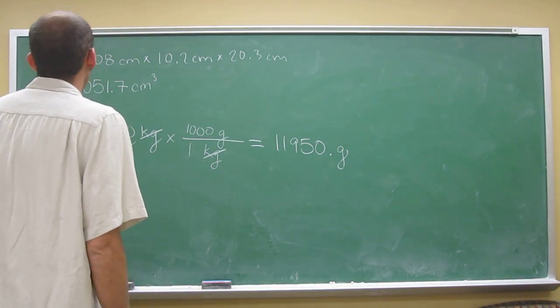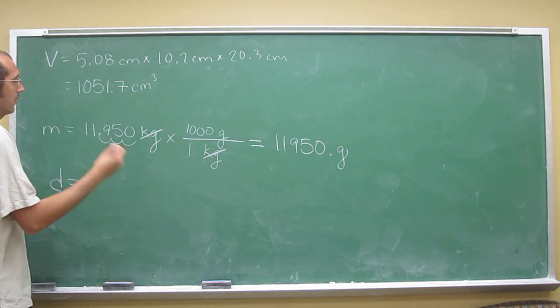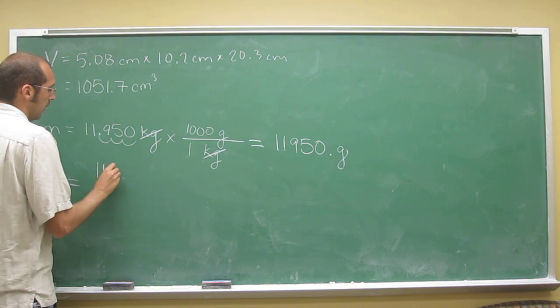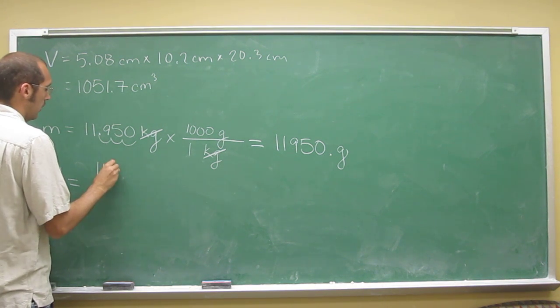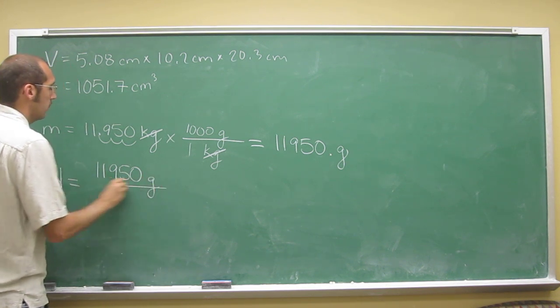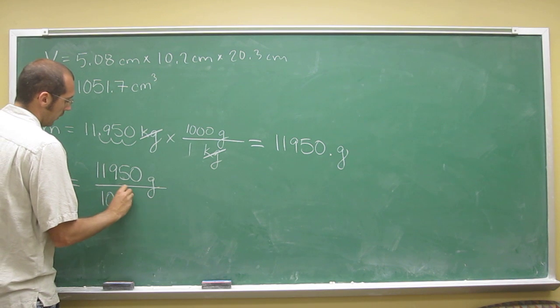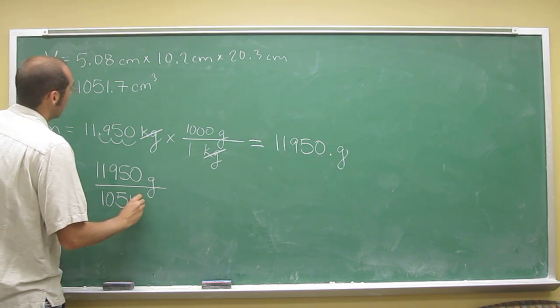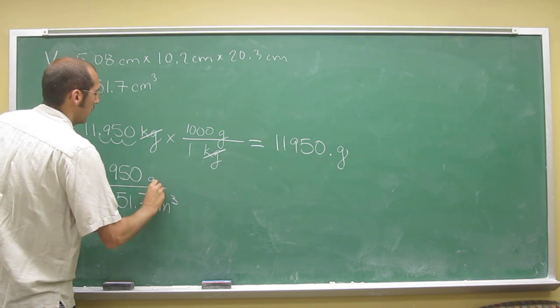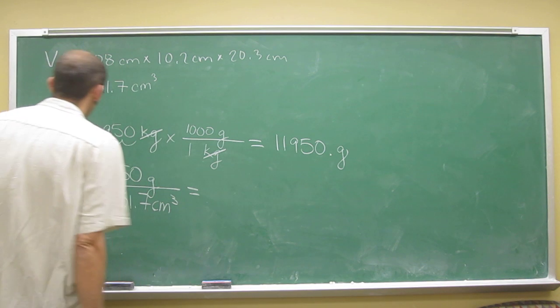And then, of course, the density is the mass divided by the volume. So the mass is 11,950 grams divided by 1051.7 centimeters cubed. And so that's going to give us grams per centimeters cubed, which is the units that we want.